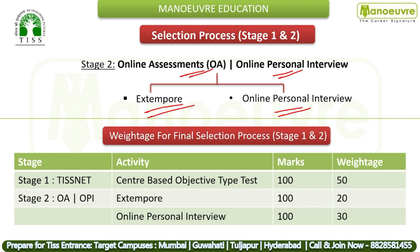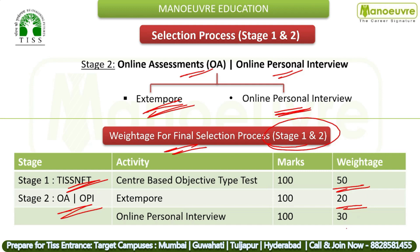In the extempore round, a topic is given and you have to speak on it. Topics can relate to current affairs, national or international issues, or anything mentioned in your bio-sketch. Regarding weightage for final selection: TISS-NET carries 50% weightage, the Online Personal Interview carries 30%, and the extempore carries 20%. So in priority, rank TISS-NET first, personal interview second, and extempore third.